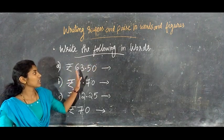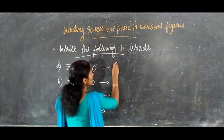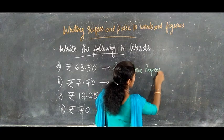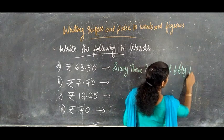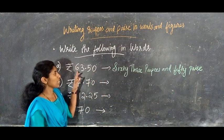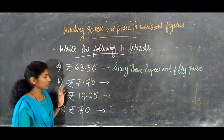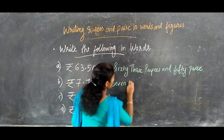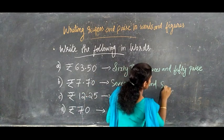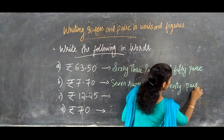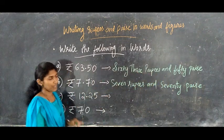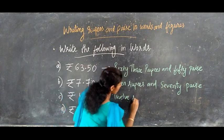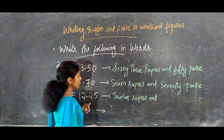Next: write the following in words. We have to convert the figures to words. For example, ₹7.75 is written as 7 rupees and 75 paisa. Then ₹12.25 is written as 12 rupees and 25 paisa.